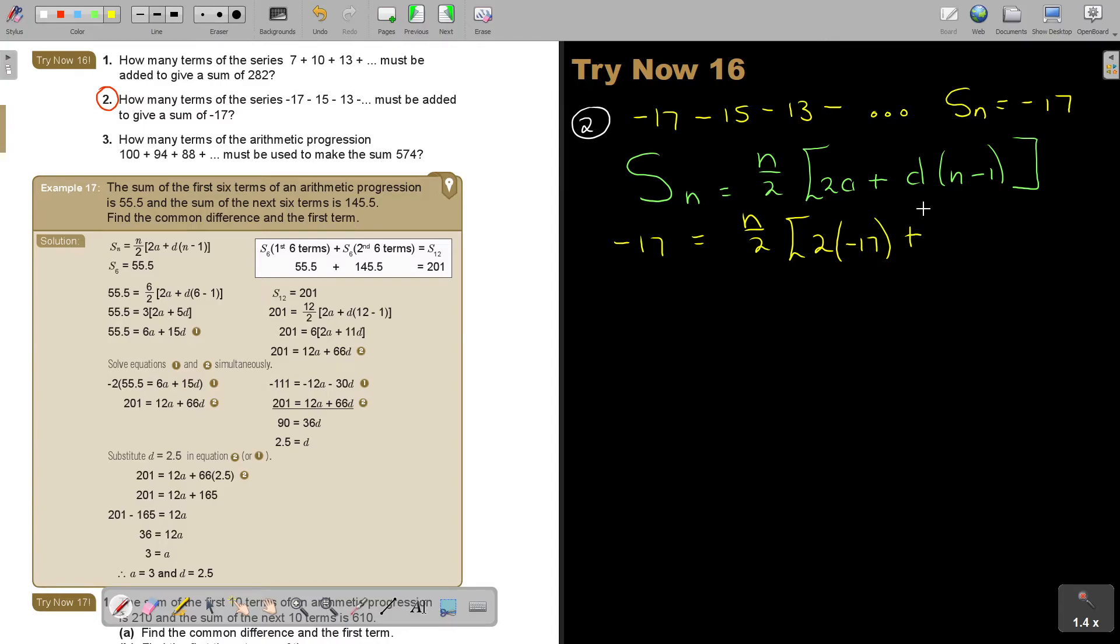And D, how will I get D? If I want to get D, it's T2 minus T1, which would have been, use your brackets so you won't make a mistake, which would have been negative 15 plus 17, and that's 2. And then, oh, I forgot that I'm looking for N.